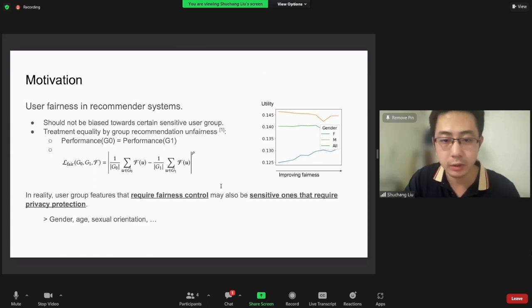The fairness problem has recently been an important topic in recommender systems. Here we refer to the user group fairness problem and require the system to treat different user groups equally. We consider unfairness as the difference between user groups in terms of their recommendation performance. However, the user group features that require fairness control are usually sensitive features, for example, gender, age, and sexual orientation, so users might have privacy concerns to review this information.